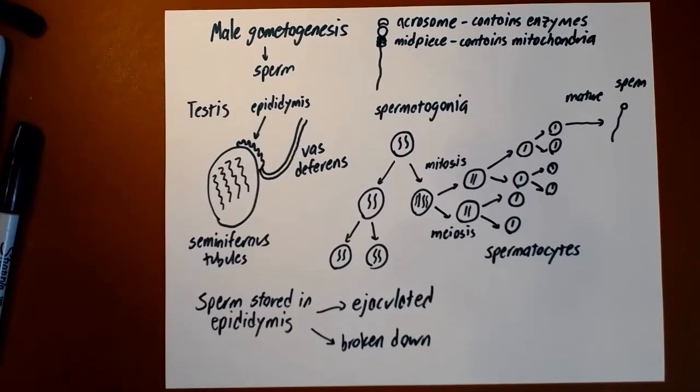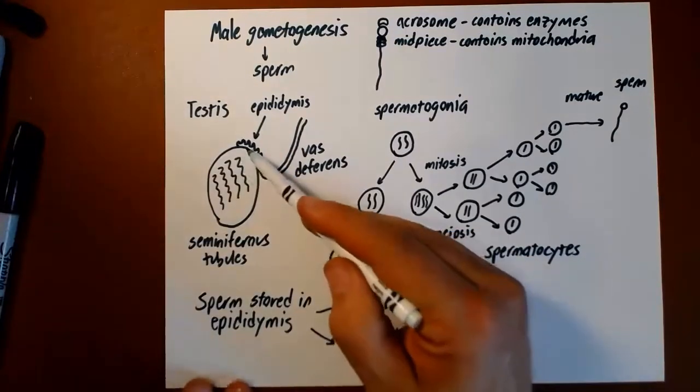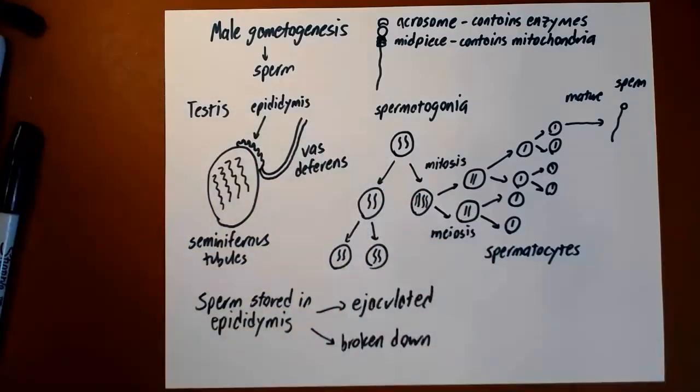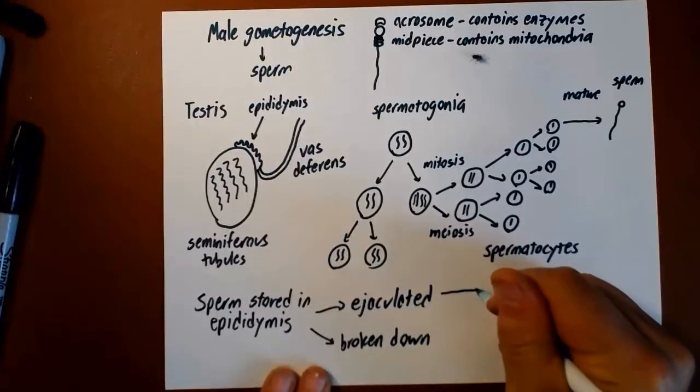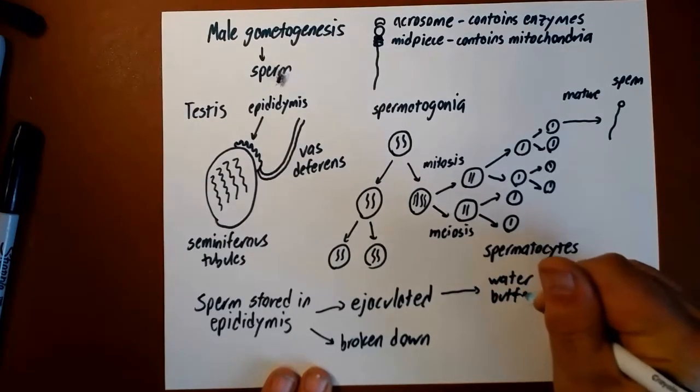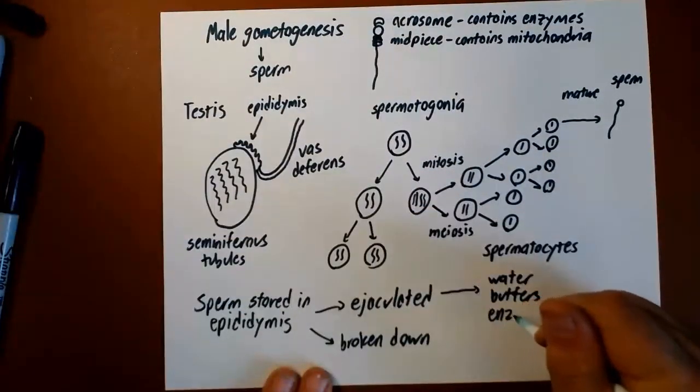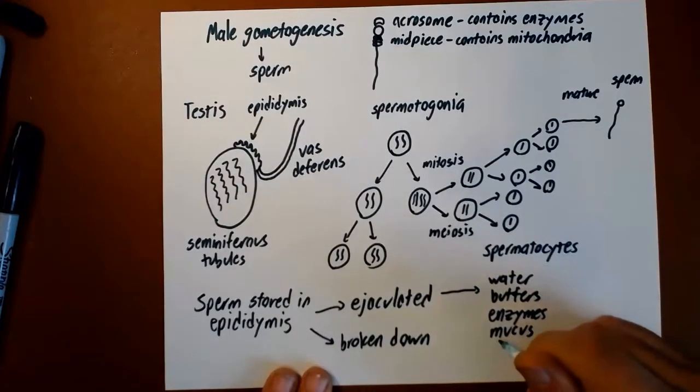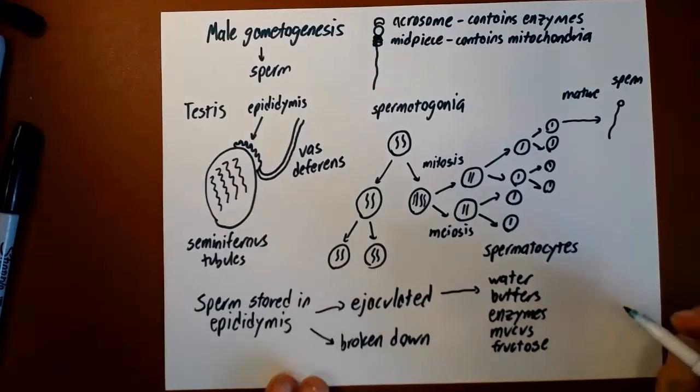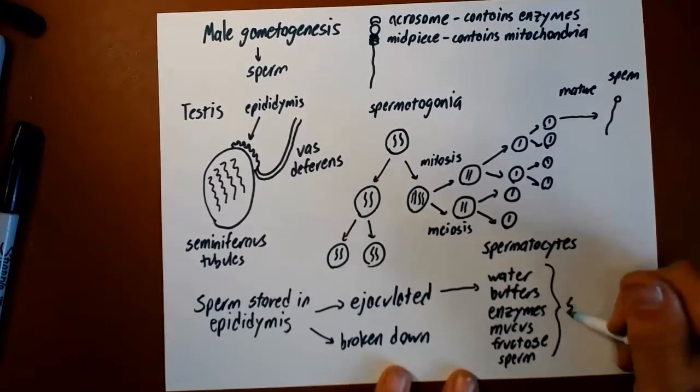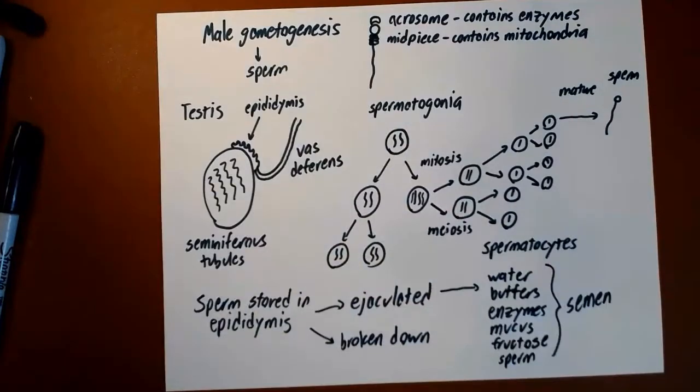If we're going to ejaculate these sperm during an ejaculation, sperm are taken from the epididymis, moved up the vas deferens. The vas deferens then combines them with various water, buffers, enzymes, mucus, fructose which is food for sperm, as well as sperm. All of that becomes semen, which is the fluid that is ejaculated from the penis.